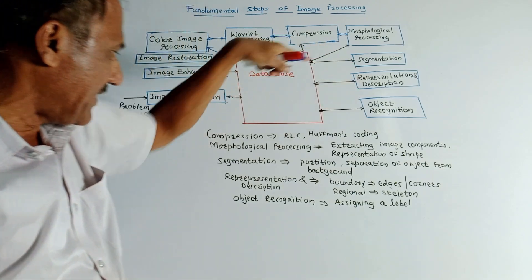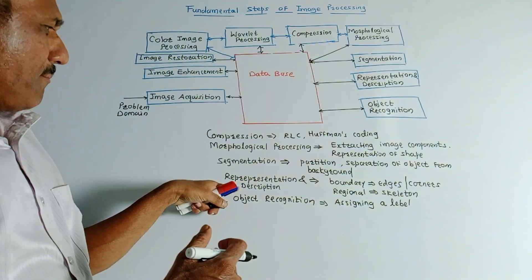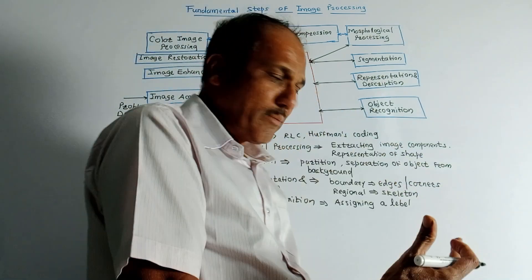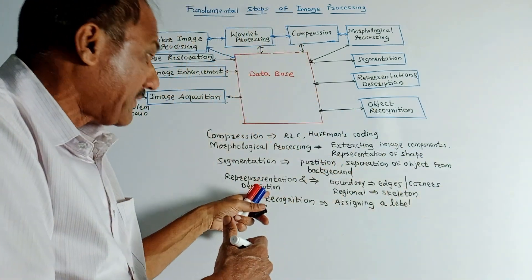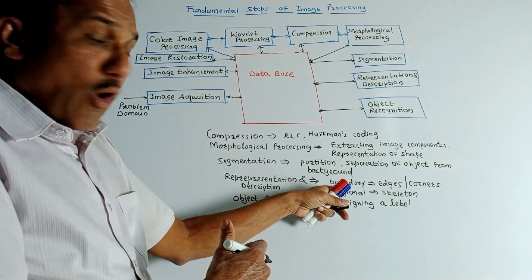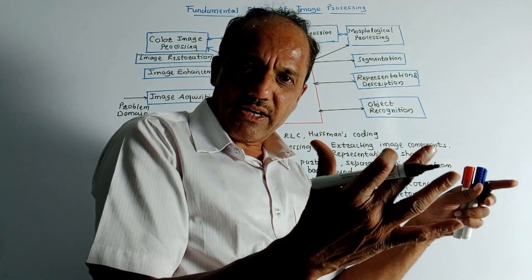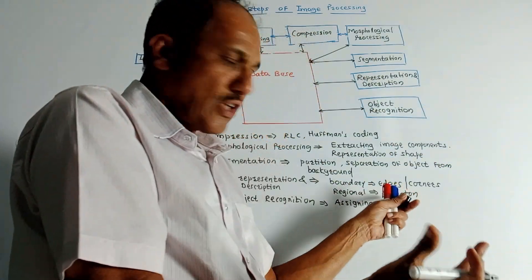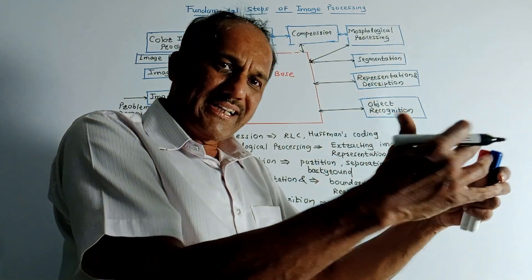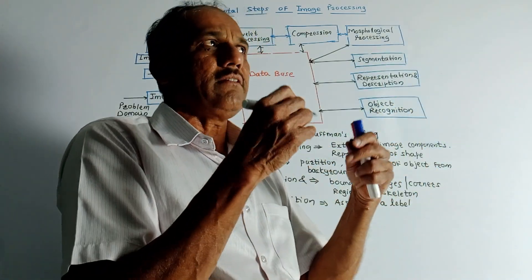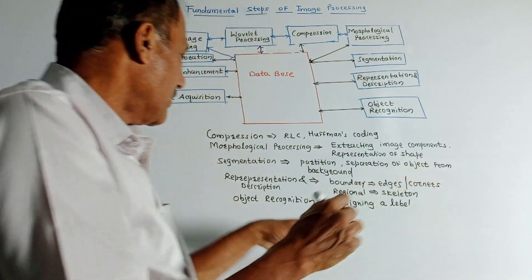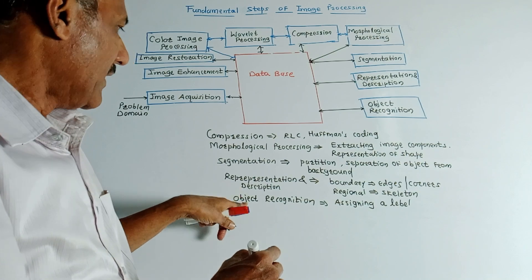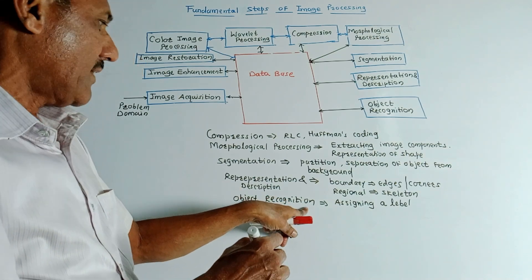The next block is representation and description. It is used to represent the image in different formats. There are different descriptors: boundary descriptors, which are used to identify edges or corners of an image, and regional descriptors, which are used to obtain the skeleton of an image. Representation and description techniques are used to obtain all such things.